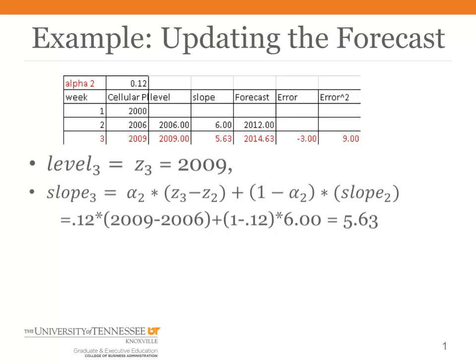And alpha 2, we're going to save alpha 1 for another use. We're going to call this alpha, alpha 2. Alpha 2 is the weight that you put on the most recent slope. And 1 minus alpha 2 is the weight that you put on the previous slope. So in period 3, we update our estimate of the slope using that formula. And we get that value there, 5.63.